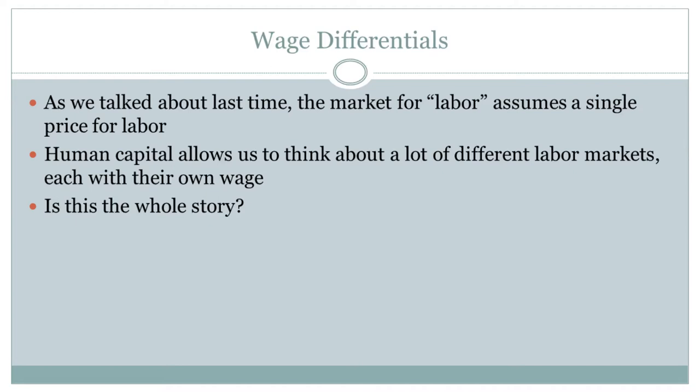Last time, we talked about the market for labor in general and the concept of wage differentials — simply the fact that different people get paid different wages. We gave one explanation for why: human capital. Human capital is basically the set of skills that you have. General human capital is the general pool of skills — things like reading, writing, knowing not to yell at your boss. Specific human capital refers to skills specific to a particular kind of job, like knowing how to build a chair, which is helpful in the chair-building business but not so helpful if you are a dog walker.